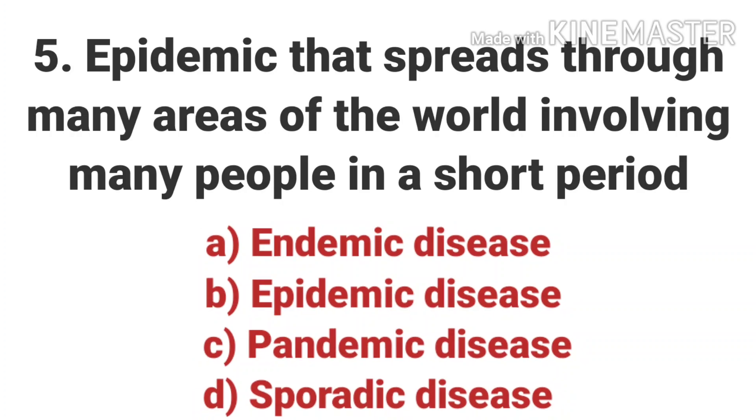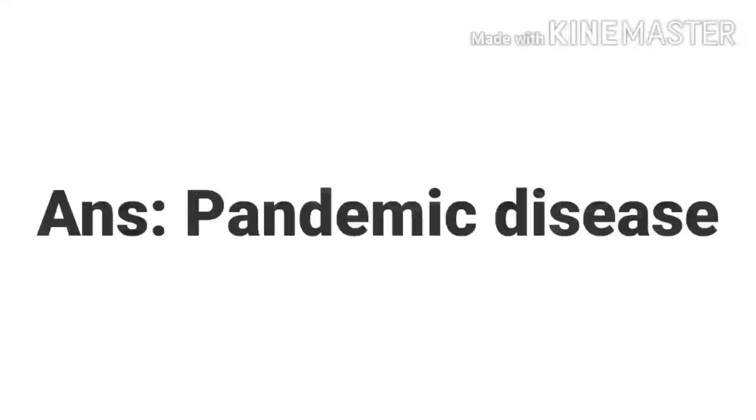The fifth question is: an epidemic that spreads through many areas of the world involving many people in a short period. Options are Endemic Disease, Epidemic Disease, Pandemic Disease, and Sporadic Disease. The answer is Pandemic Disease. Endemic means a disease that belongs to a particular people or country. Epidemic means a disease that affects a large number of people within a community, population, or region. Sporadic means occurring at irregular intervals or only in a few scattered places.